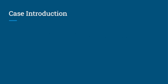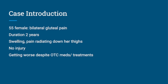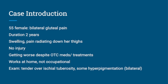Let's talk about this really interesting case of ischial bursitis. This was a 55-year-old female who presented with bilateral gluteal pain for about two years. She was complaining of swelling and pain radiating down from the gluteal region into her thighs. She had no injury, and it was getting worse despite home remedies and over-the-counter medications. She couldn't think of any clear occupational etiology. On exam, she is tender over the ischial tuberosity and noted to have some hyperpigmentation on the skin bilaterally, which is not pictured.